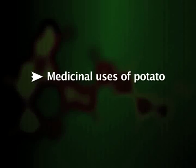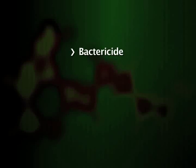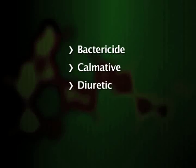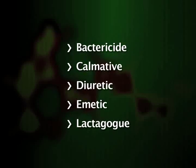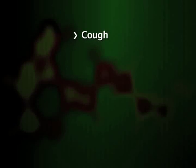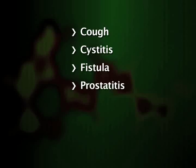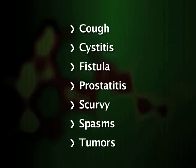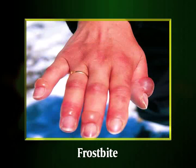For medicinal uses, potato is reported to be bactericidal, carminative, diuretic, emetic and lactagogue. Potato is a folk remedy for burns, corns, cough, cystitis, fistula, prostatitis, scurvy, spasms, tumors and warts. The mealy flour of baked potato is applied to frostbite. The tea made from the peels of the tuber is said to be a folk remedy for tumors. The boiled tuber is said to alleviate corns. The powdered tuber with copper sulphate is said to help callous fistulas.